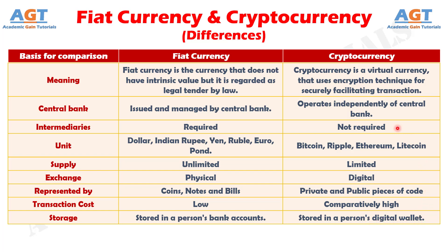Cryptocurrency is non-traceable in nature, in the sense that it neither discloses your worth, nor does anyone have any idea of the amount in your wallet and the location of your wallet. However, fiat currency is traceable as it is usually maintained in the banks, and thus the government authorities and banks can have complete information about your receipts and payments. So, these are the differences between fiat currency and cryptocurrency.